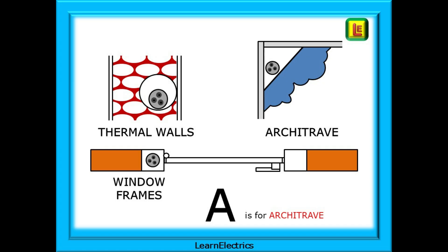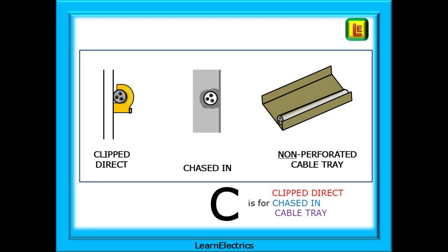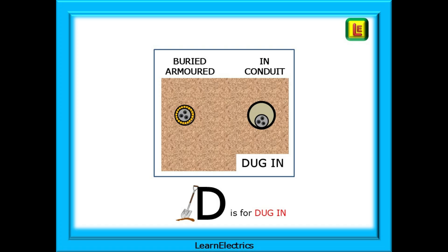We begin with installation method A. Think of A as for architrave, with the cable tucked into the gap behind the architrave. Now think of the cable passing through conduit in a thermal wall - another gap that looks just like the architrave gap. So A is for architrave. Method B is next - trunking is like a box, so B is for box. B is also for cable inside a conduit clipped onto a surface; it just happens to be a round box. So B is for box. C is for clipped direct. C also works for chased-in just below the surface of the plaster, and also for non-perforated cable trays. D is for dug-in - armoured cable or cable in conduit that is buried in the ground must have had a hole dug for it at some time.